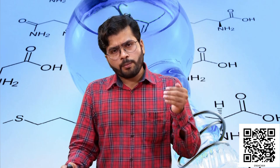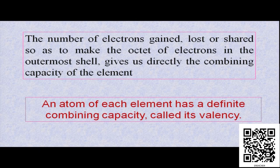Now I hope from all these examples you are very much clear about valency. So let us recall again. What is valency? The combining capacity of a particular atom. What is combining capacity? The number of electrons it can lose or it can gain or it can share in order to have 8 electrons in its outermost shell or to fulfill the octet — that will be your valency.